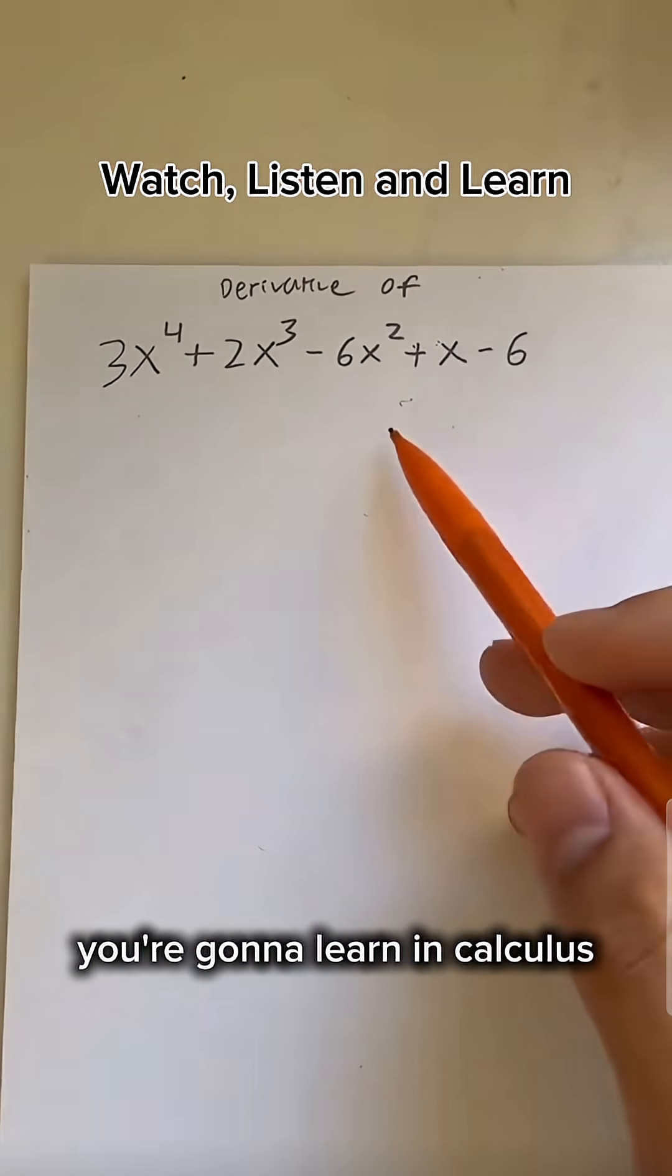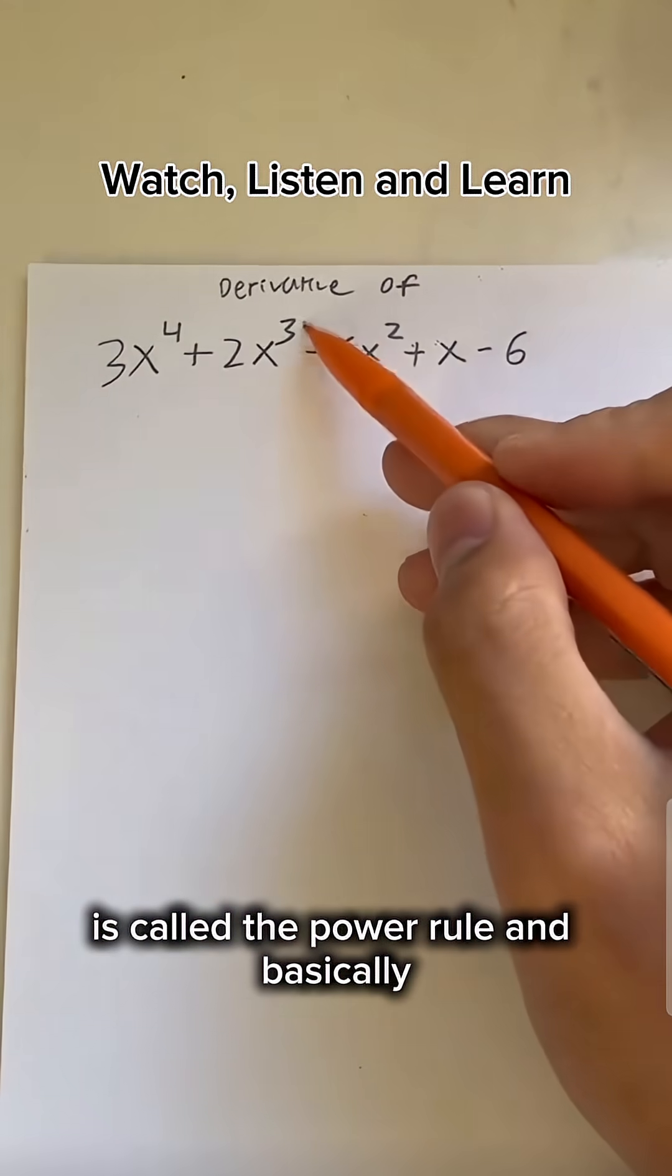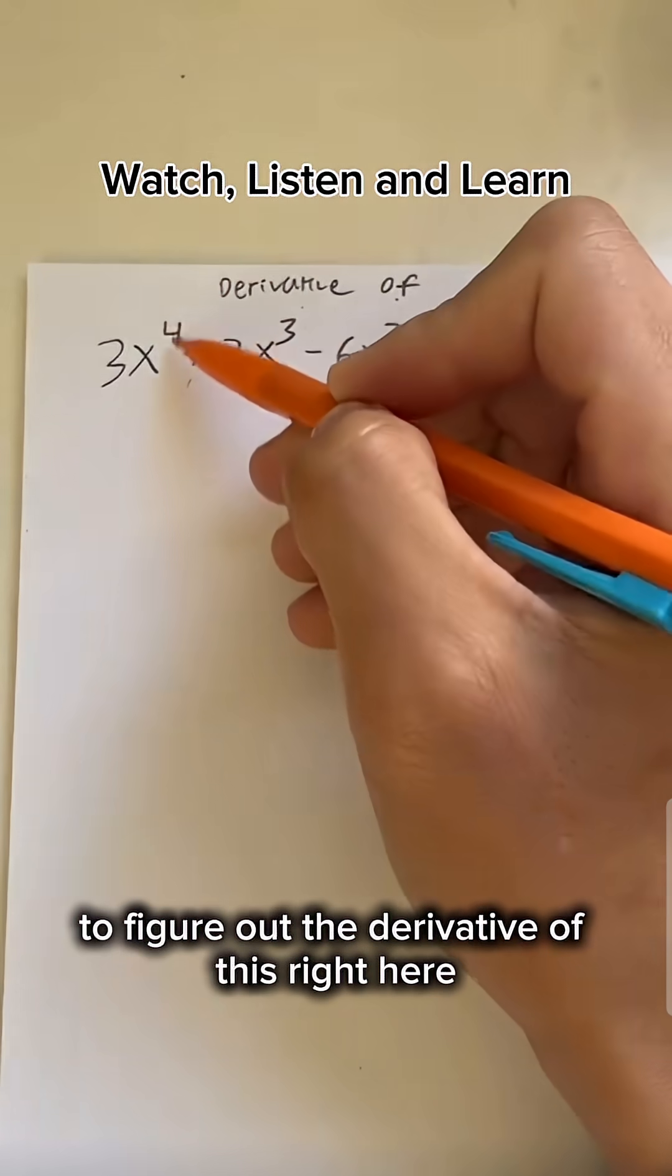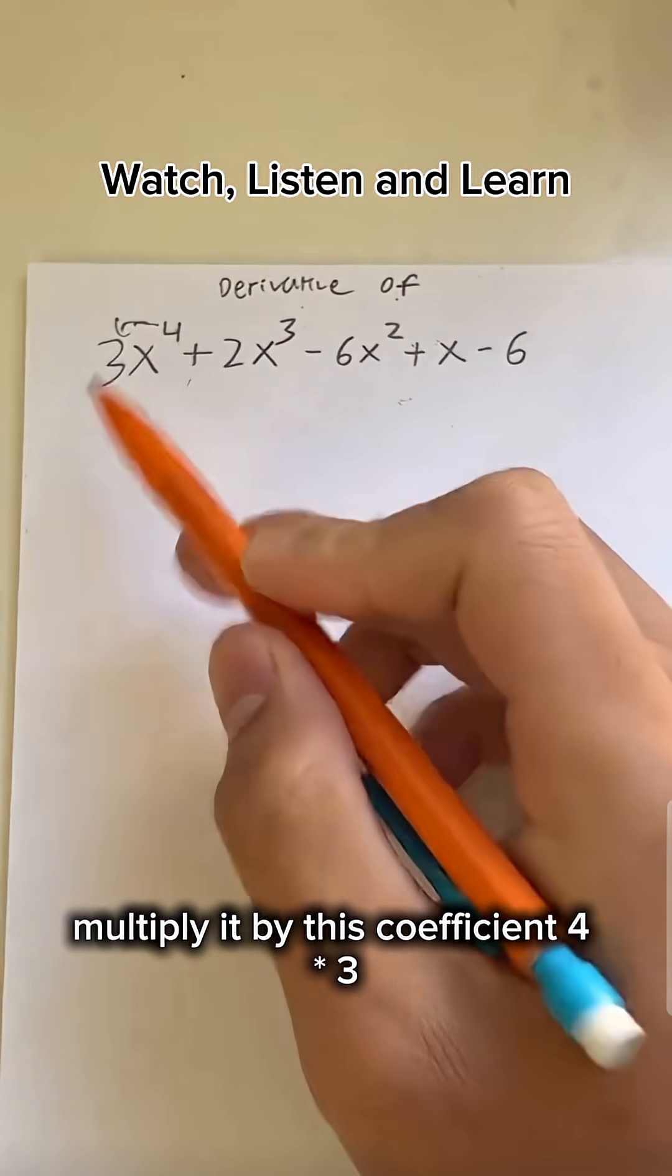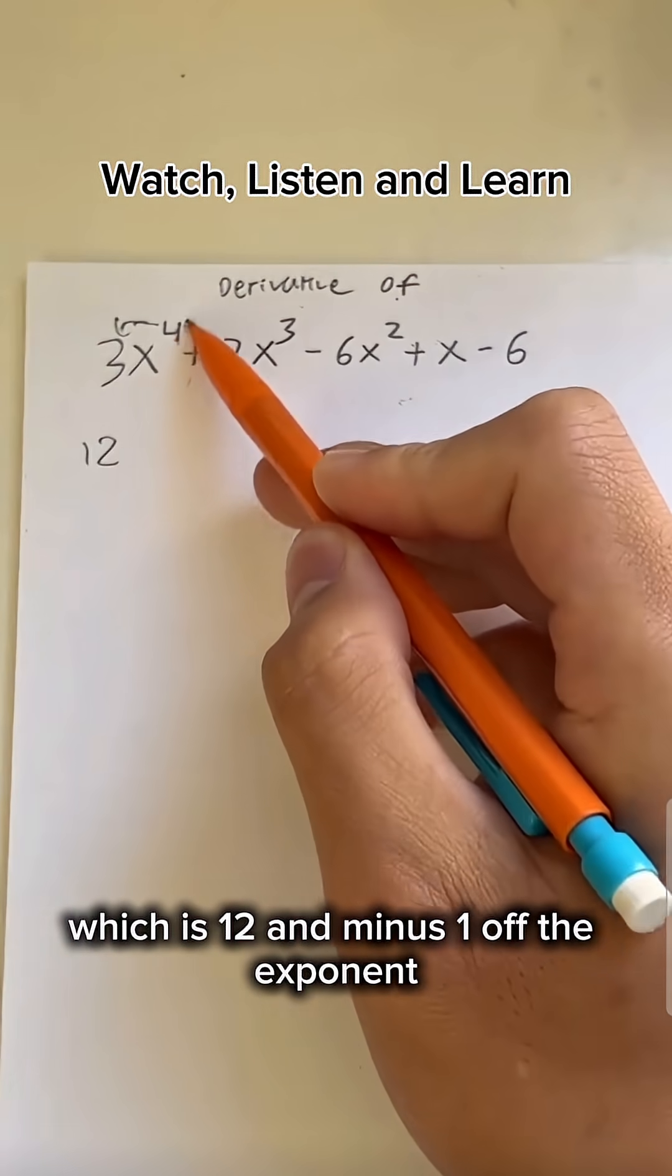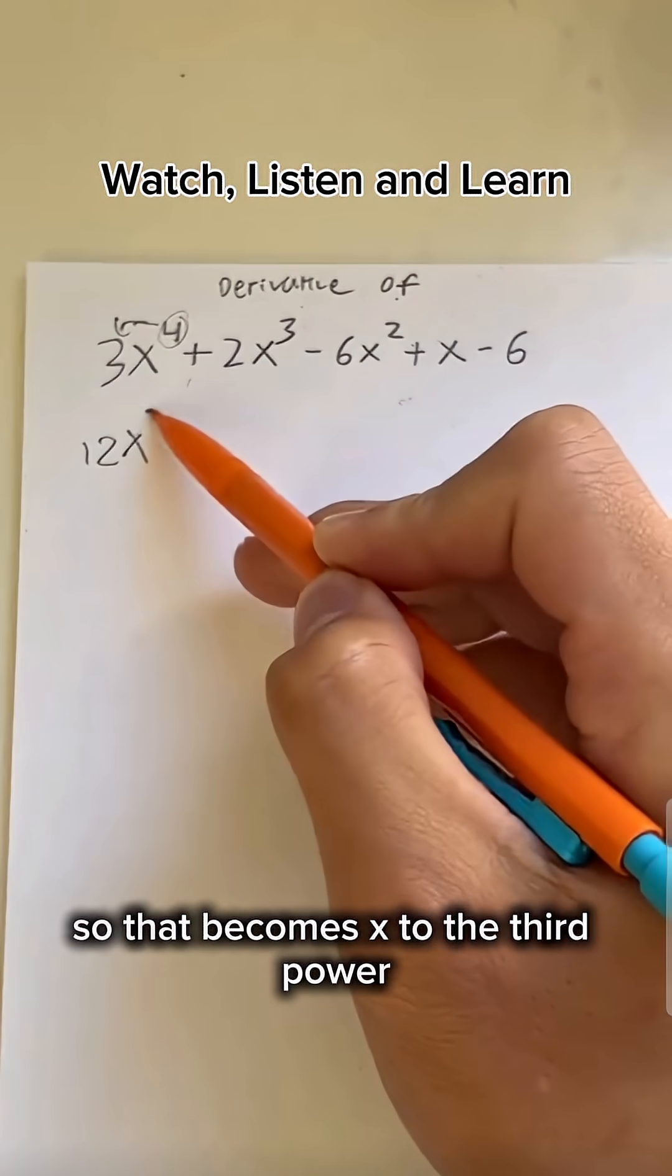Now, the first and most important rule you're going to learn in calculus is called the power rule. Basically, to figure out the derivative of this right here, all you have to do is take this exponent, multiply it by this coefficient, 4 times 3, which is 12, and minus 1 off the exponent. So that becomes x to the third power.